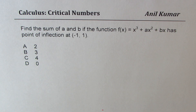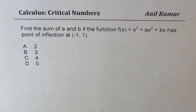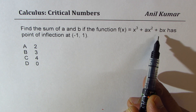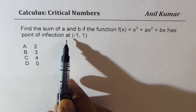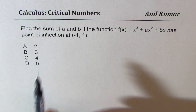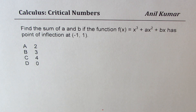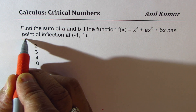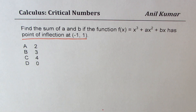I am Anil Kumar sharing with you a test question on calculus. The question is: find the sum of a and b if the function f(x) equals x cubed plus ax squared plus bx has a point of inflection at (-1, 1). Let's first understand what a point of inflection is, and then we will answer this question.